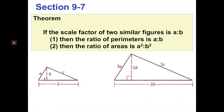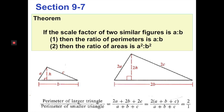Here's the proof for the perimeter part. The perimeter of the larger triangle is 2A plus 2B plus 2C, which equals 2 times the quantity (A plus B plus C). And A plus B plus C is just the perimeter of the generic original triangle. So those factors cancel and we get 2-over-1 as the ratio of the larger triangle's perimeter to the smaller — a 2-to-1 ratio, confirming scale factor equals perimeter ratio.